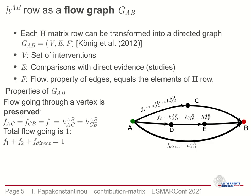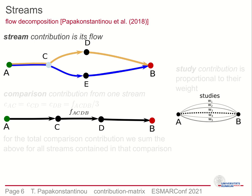Our approach was motivated by the observation of Kenning et al. that each row's elements represent flow from A to B in the respective flow graph, and the total flow is always one. So assigning contribution becomes the task of partitioning or decomposing the aforementioned flow. We break up the flow in the graph into a number of streams of constant flow, where the contribution of a stream is equal to its flow. The stream is therefore defined by the path it follows and its flow.